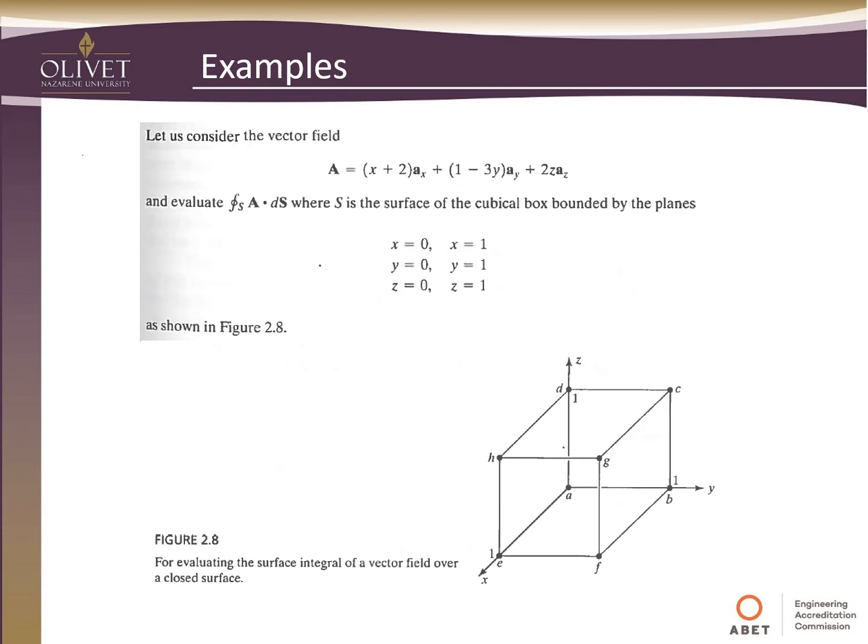So here we want to do a closed surface integral. So we're going to consider this vector field here. We're not told what kind of vector field it is. We could assume it's magnetic field. So it's defined, it has an x component, a y component, and a z component, you can see there. And so the surface we want to integrate over is just x going from 0 to 1, y going from 0 to 1, z going from 0 to 1. So it creates this cube function here. So we want to integrate it over the surface to see what the total field emanating out of that box area is.